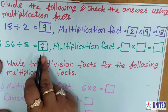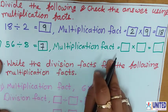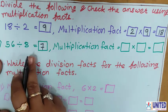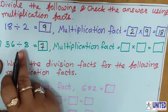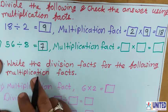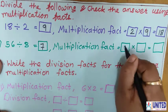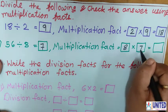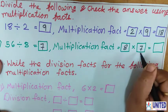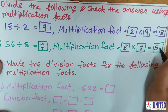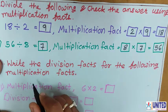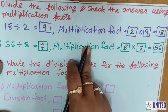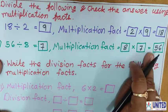Let us check. How can we check? By using the multiplication fact, you have to just multiply the divisor and the quotient. So, 8 is the divisor and the quotient — the answer — is 7. So what are 8 sevens? 56. That means our answer is correct. In this way, any division you can write in terms of a multiplication fact.